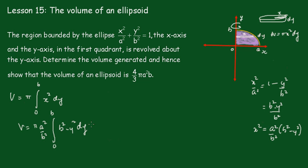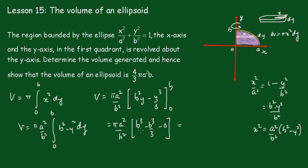We're all set to go now. The volume equals πa²/b² times [b²y - y³/3] between b and 0, and this becomes πa²/b² times (b³ - b³/3), which is (2/3)b³. So this becomes πa²/b² times (2/3)b³, which simplifies to (2/3)πa²b.